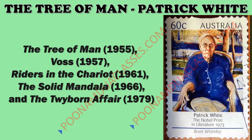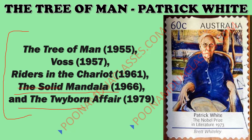These are some other prominent works by Patrick White: The Tree of Man, Voss, Riders in the Chariot, The Solid Mandala, and Toyburn Affair (1979).